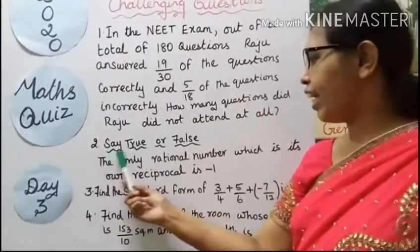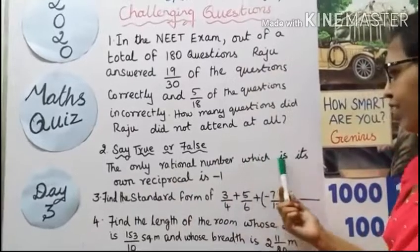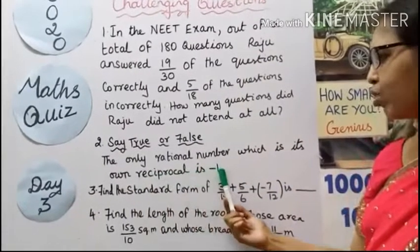Second question, say true or false. The only rational number which is its own reciprocal is minus 1.